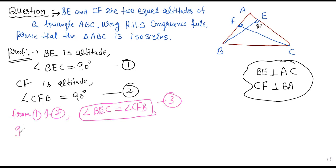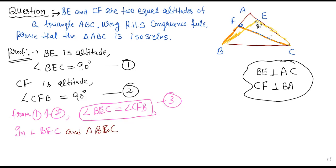Now in triangle BFC and triangle BEC — I can show these two triangles here. We take these two triangles because angle BFC is 90 degrees and angle BEC is 90 degrees, so both are the same right-angle triangles.